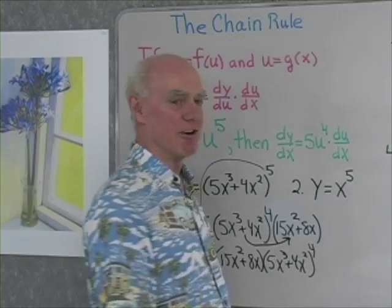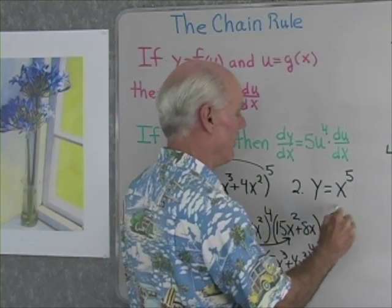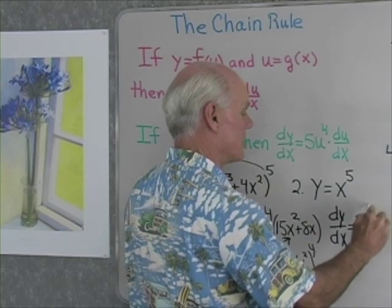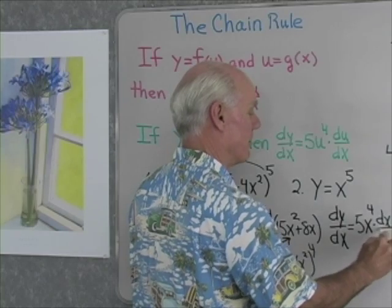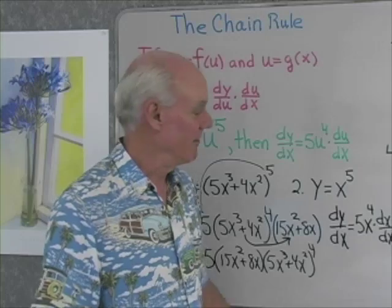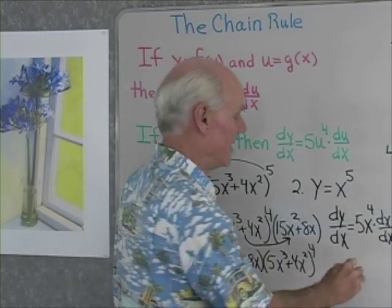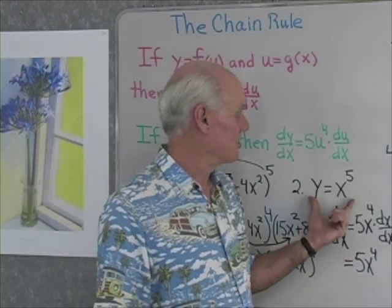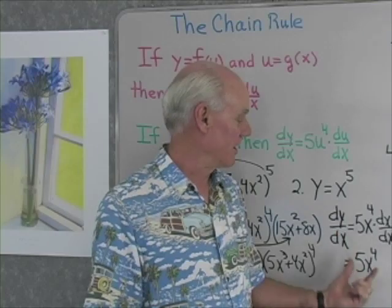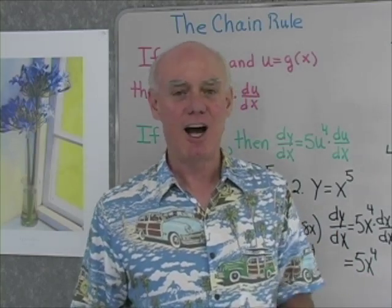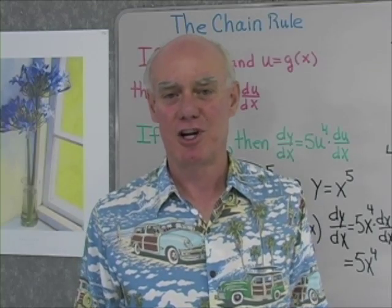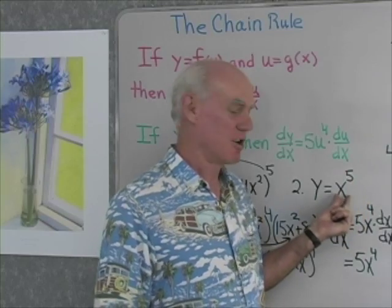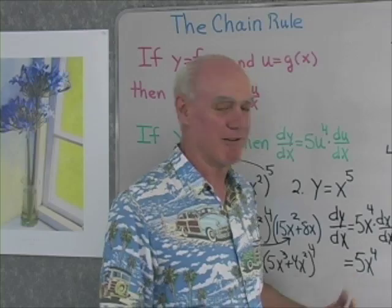Let's try another problem. I have y equals x to the fifth power. I'll use the chain rule. The derivative of y with respect to x is going to be 5x to the fourth times the derivative of x — the base — with respect to x. But the derivative of x with respect to x is just 1, so this comes out 5x to the fourth. Nothing's changed. All the things we knew about differentiation with exponents like this are still the same. I always apply the chain rule: differentiate the base, which is 1, so it ends up 5x to the fourth.